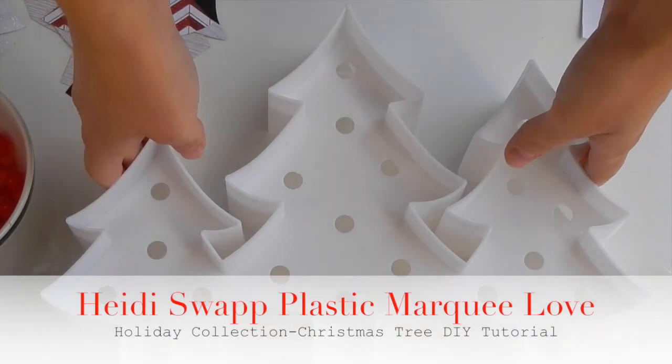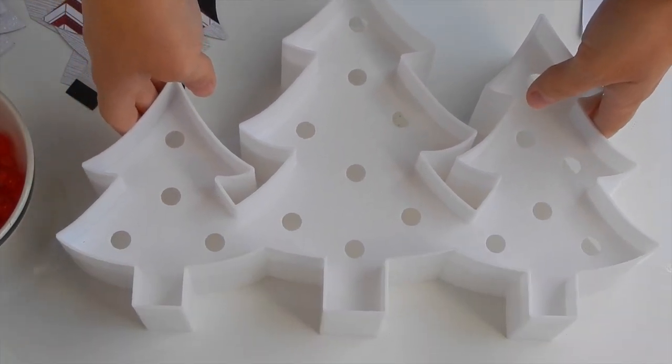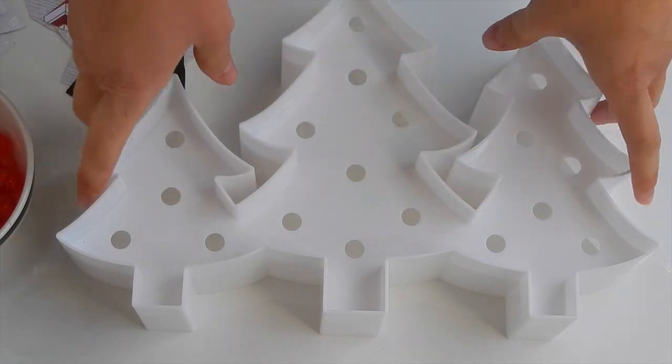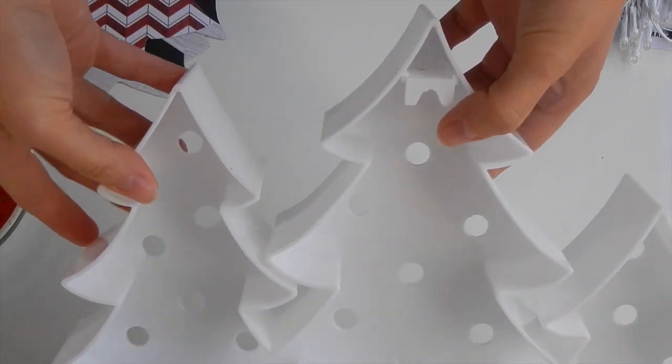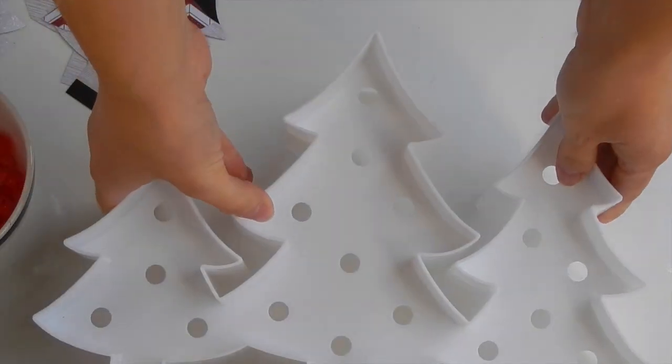Hi everyone, so here are my marquee love trees. I already removed the inside so now we're just left with the basic white shell, and that's where we're going to add the pattern paper pieces that I cut out.